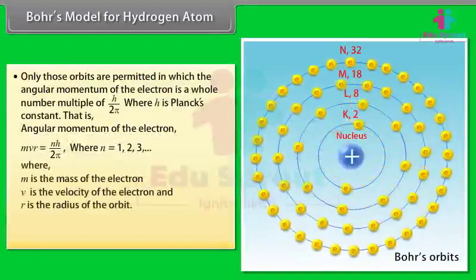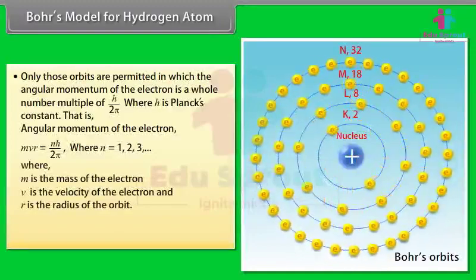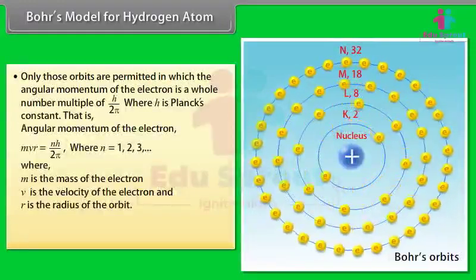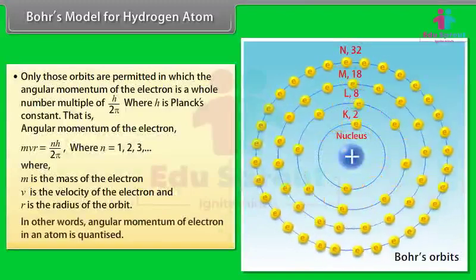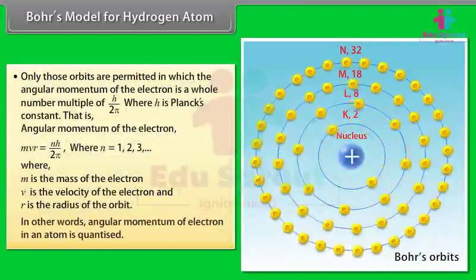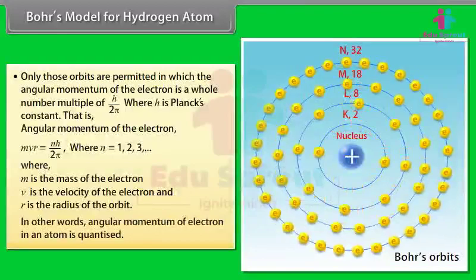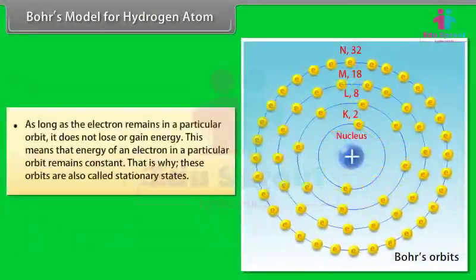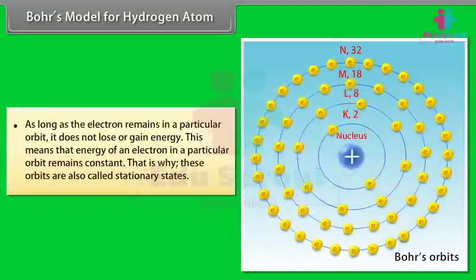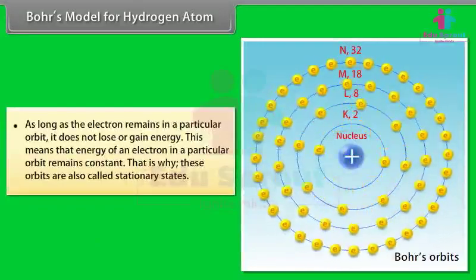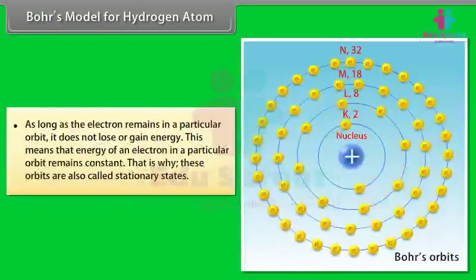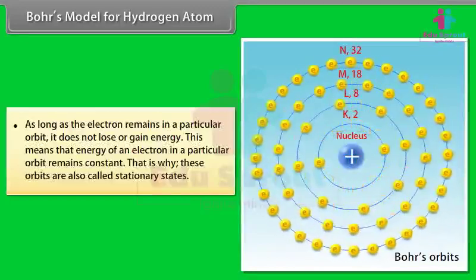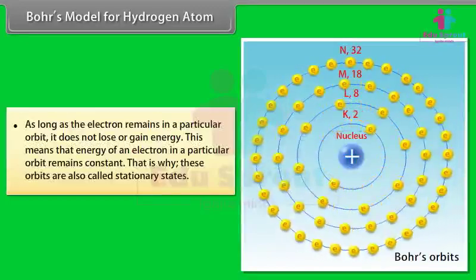Where m is the mass of the electron, v is its velocity, and r is the radius of the orbit. In other words, the angular momentum of the electron in an atom is quantized. As long as the electron remains in a particular orbit, it does not lose or gain energy — the energy remains constant. That is why these orbits are called stationary states.